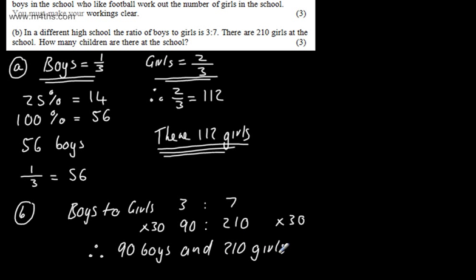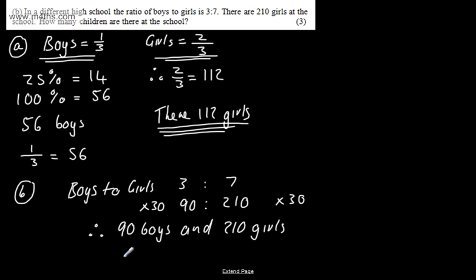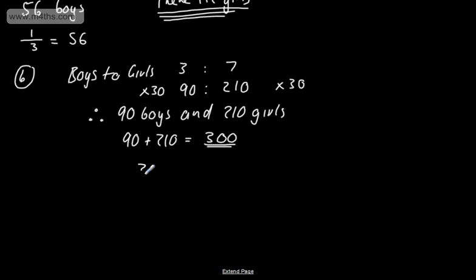I've just used equivalent ratios, and I can say from here, 90 plus 210 will be equal to 300. So, we can say now 300 students in total. So, 300 students in total.